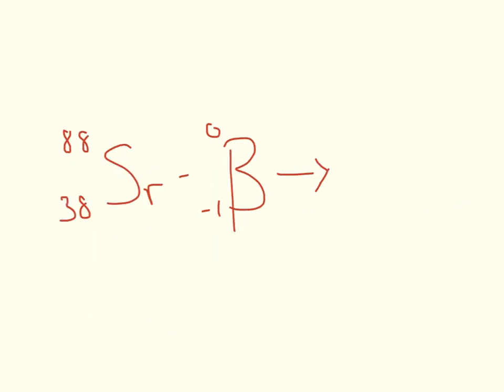So here, 88 minus 0 is 88. 38 minus minus 1 is 39. 39 from the periodic table is yttrium.